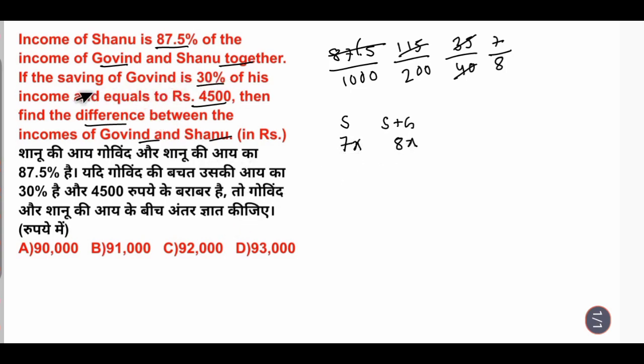Now what is it saying? If the savings of Govind is 30%, then 30% of his income equals the given value of 4500.